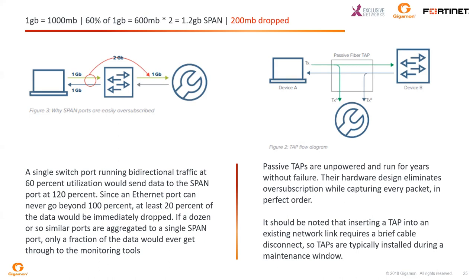If a dozen or so similar ports are aggregated to a single SPAN port, only a fraction of that data ever gets to the monitoring tools. With passive taps, which are unpowered, they run for years without failure and are the preferred type. That hardware design eliminates oversubscription while capturing every packet in order. It should be noted that to insert a tap, you do need to bring the link down — so make sure you're doing so during a maintenance window.